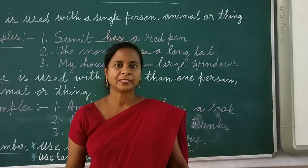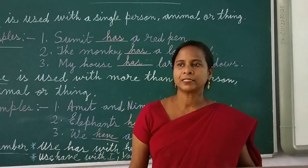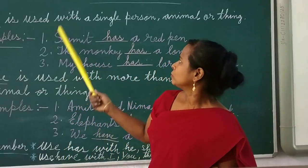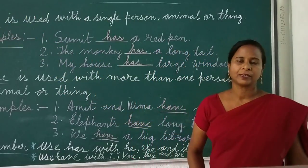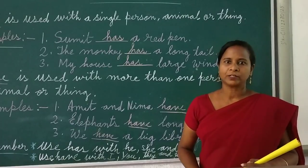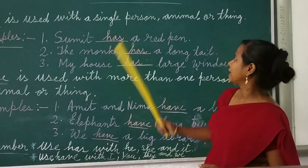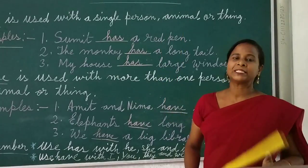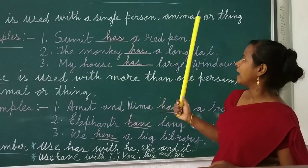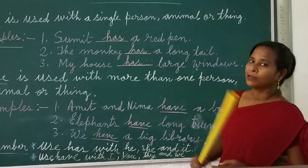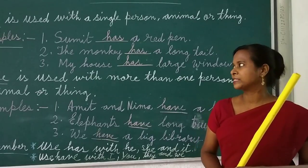What to use in sentences — 'has' and what to use — 'have'. So 'has' is used with a single person. When we talk about a single person, we have to use 'has'. When a single animal is talked about, we use 'has'. And when one thing is talked about, we have to use 'has'.